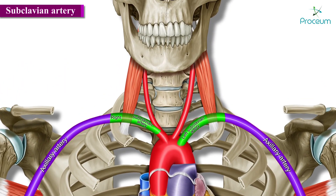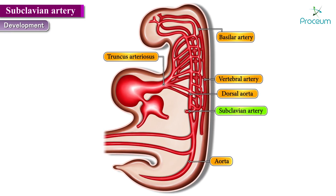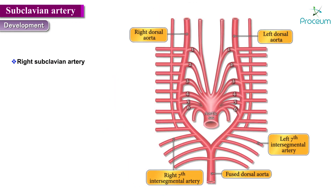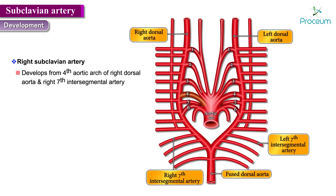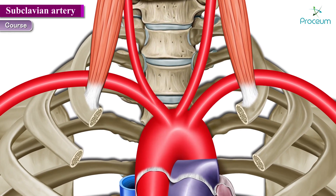Before discussing the course and branches, let's review the development of the subclavian artery. The right subclavian artery arises from the fourth aortic arch of the right dorsal aorta and the right seventh intersegmental artery. The left subclavian artery develops from the left seventh intersegmental artery.